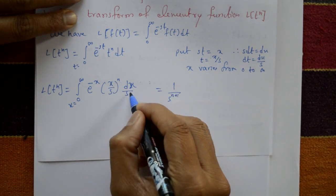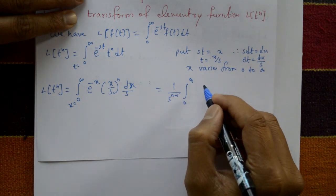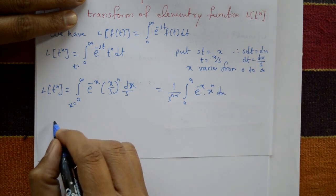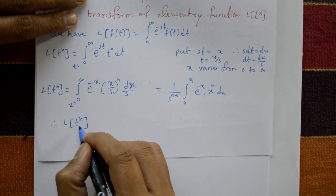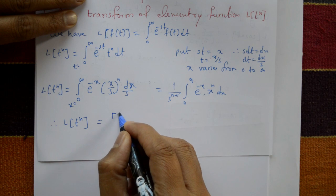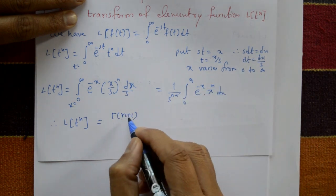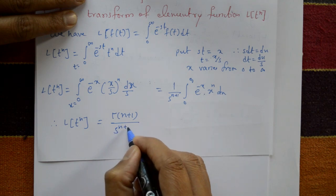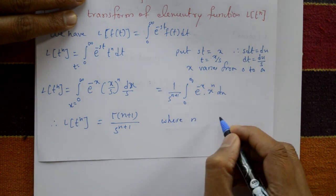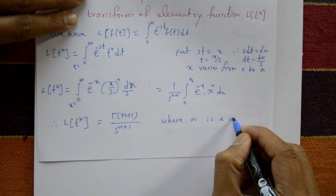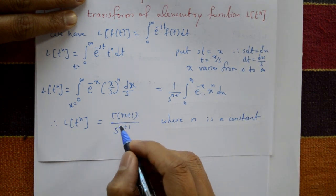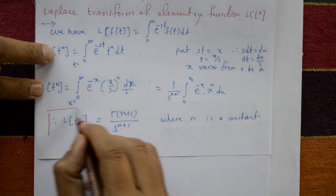This gives 1 upon s to the power n plus 1, times the integration from 0 to infinity of e raised to minus x into x raised to n dx. This integral part equals gamma of n plus 1. Therefore, the Laplace transform of t raised to n equals gamma of n plus 1 upon s to the power n plus 1, where n is a constant. This is the standard formula of Laplace transform.